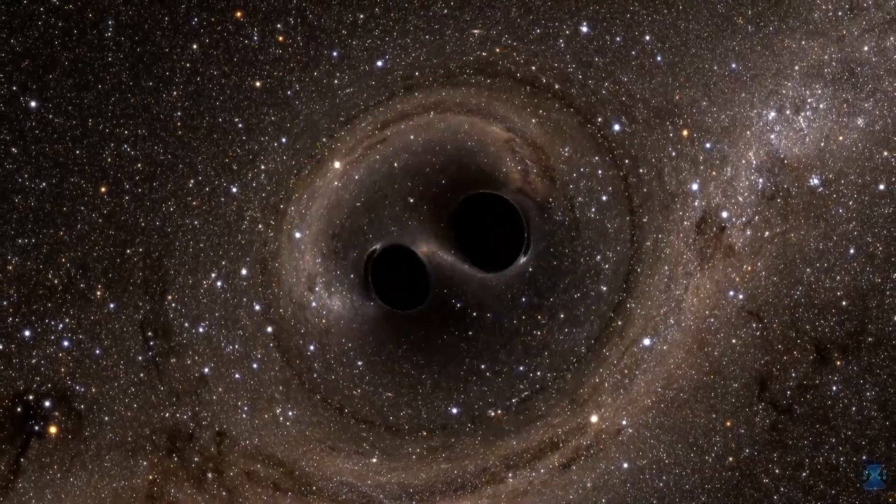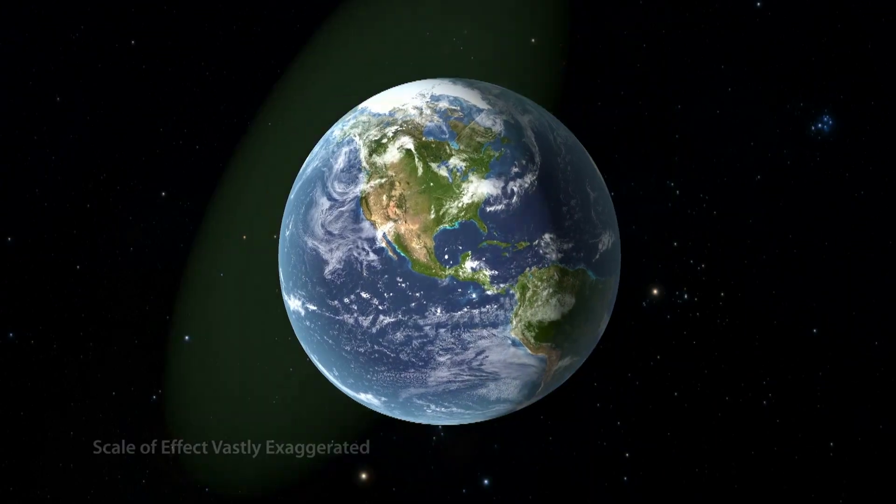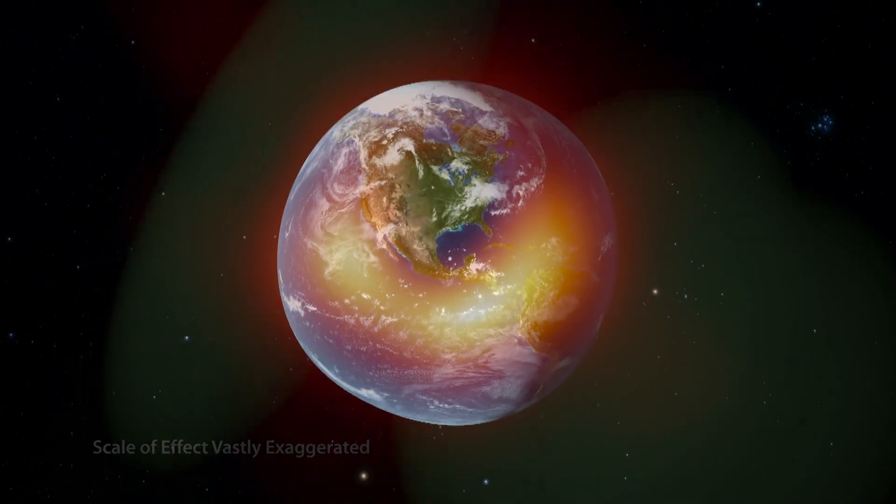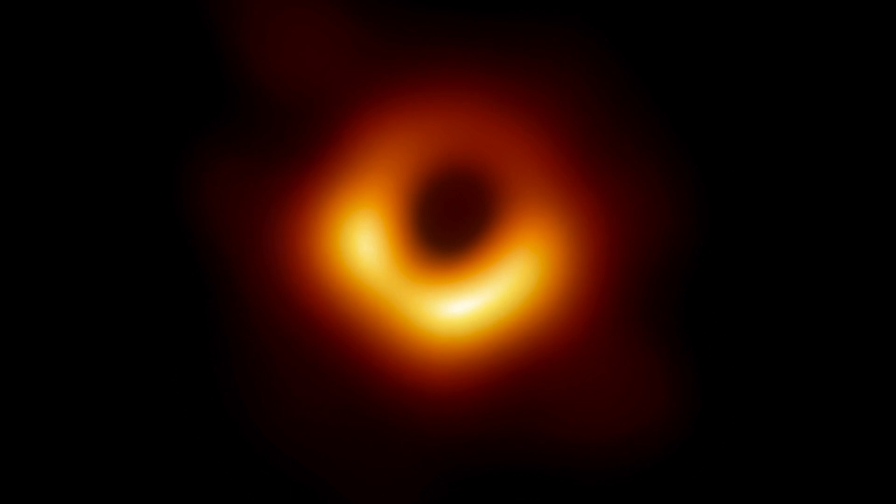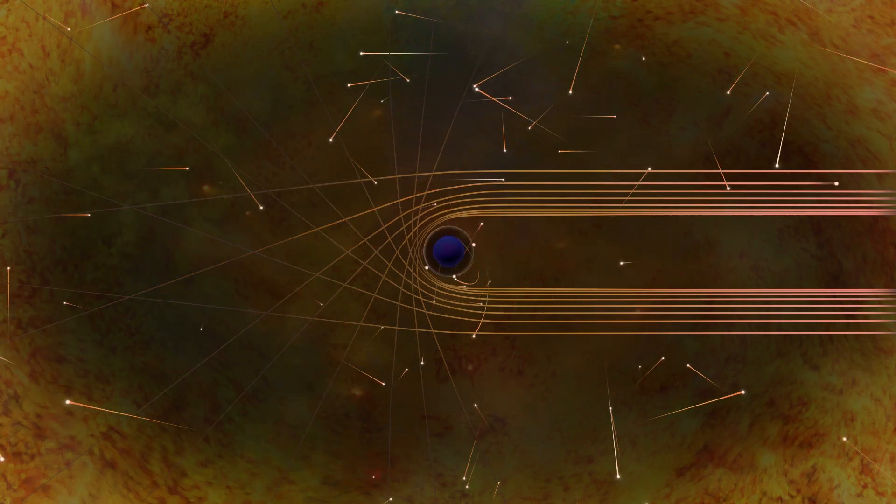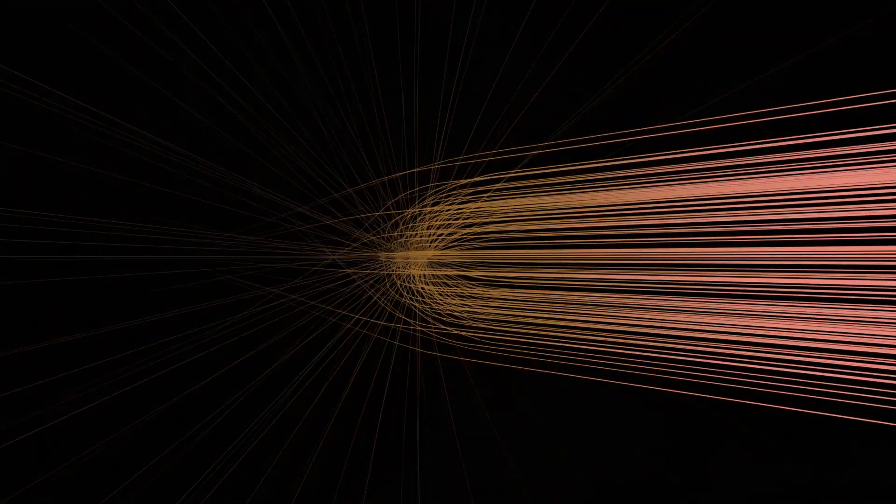But now we have a lot of evidence for the existence of black holes. There are the gravitational wave observations of coalescence of black holes from 2015 and onwards with the LIGO collaboration. There is the Event Horizon Telescope collaboration's image of how light behaves around the black hole and forms this kind of a fiery ring and shadow of a black hole.